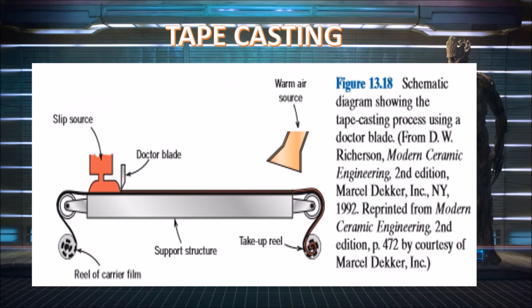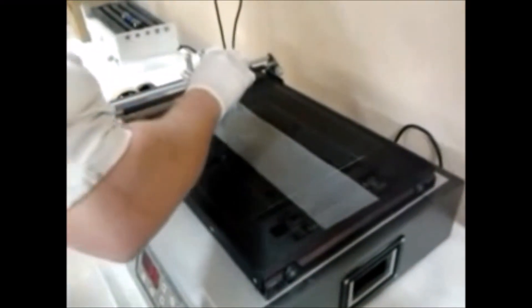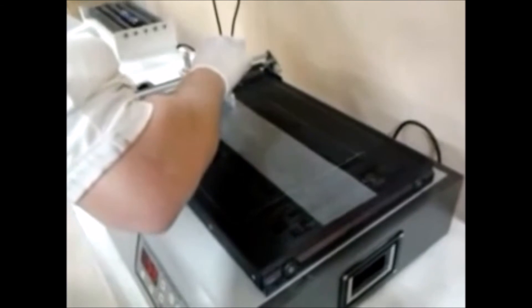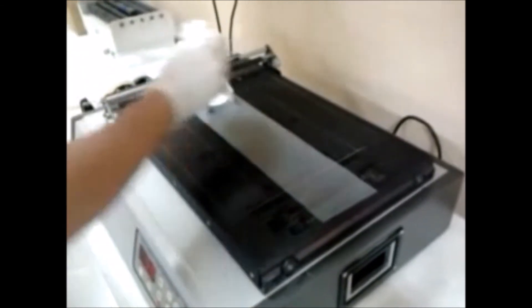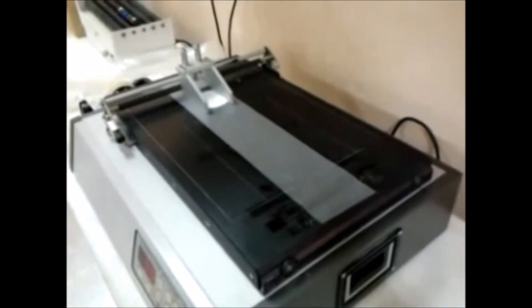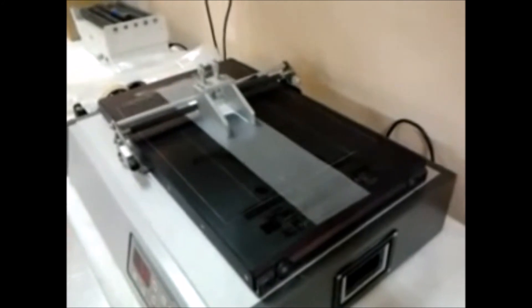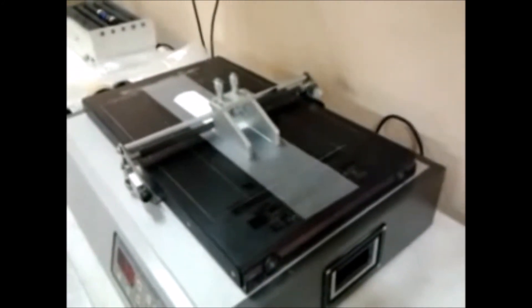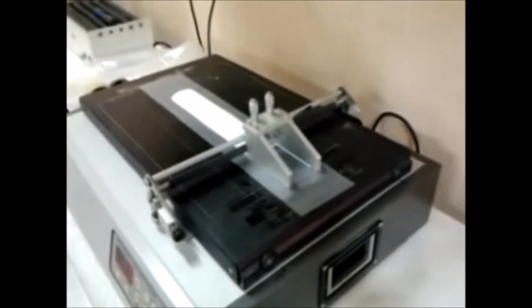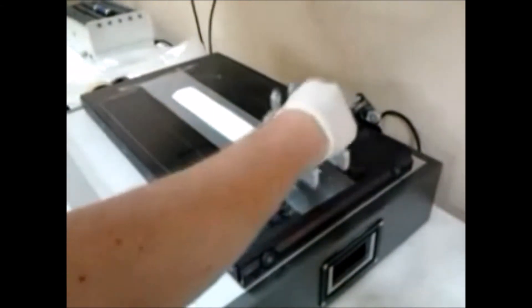Now we move on to tape casting. From the word itself, tape casting is making tapes or really thin sheets of ceramic. In the video, a person pours the ceramic slip and the machine spreads it into really thin sheets — just like tape.